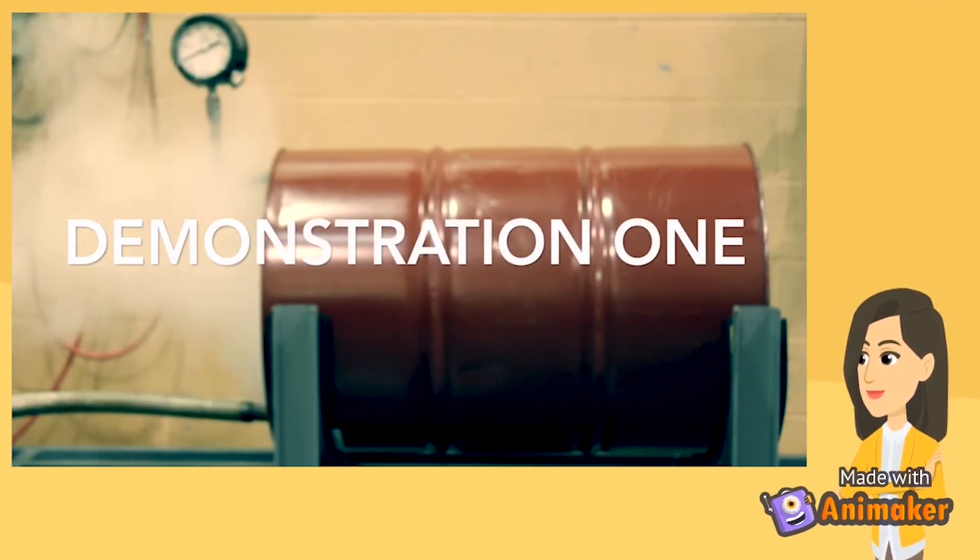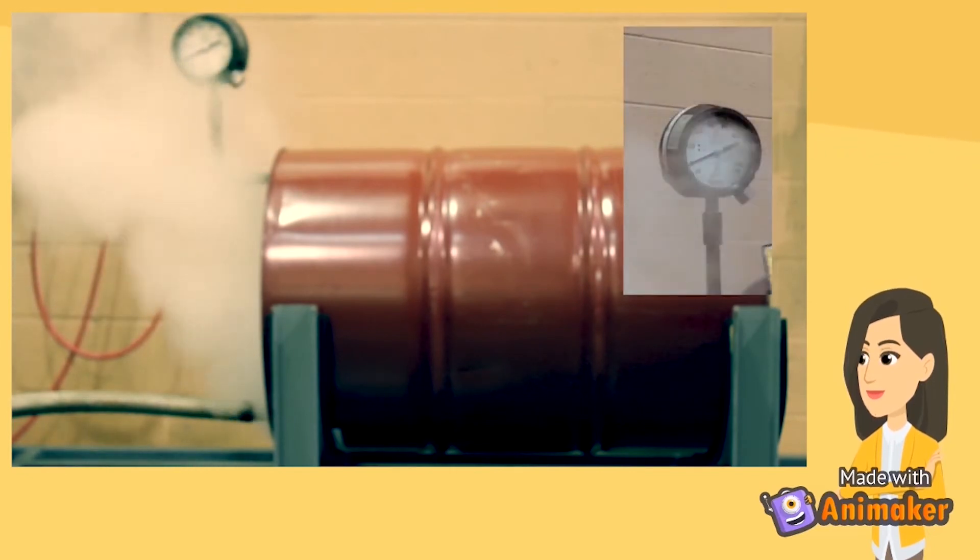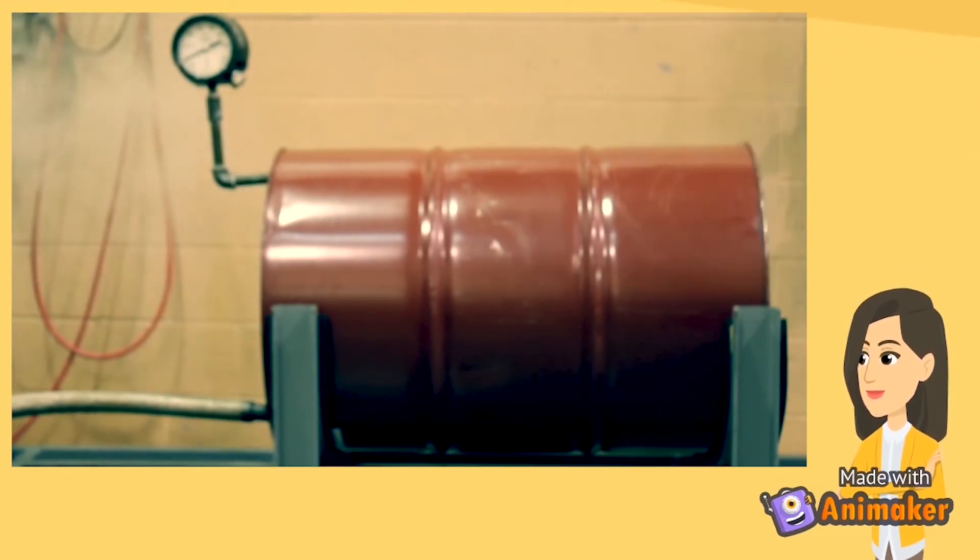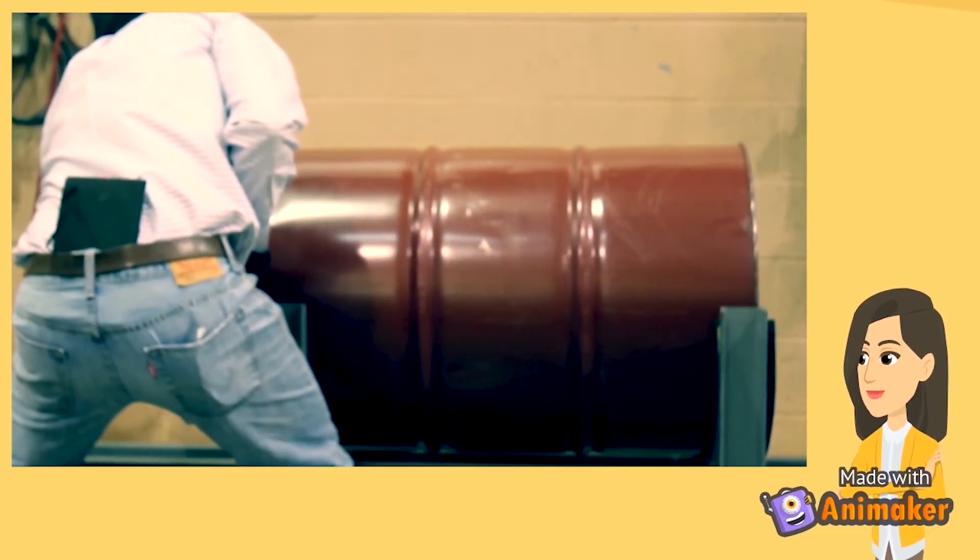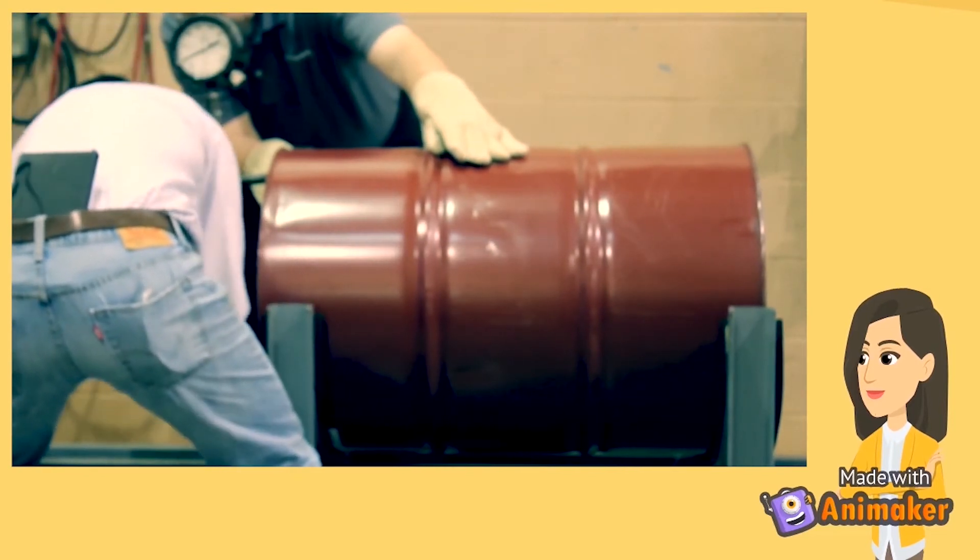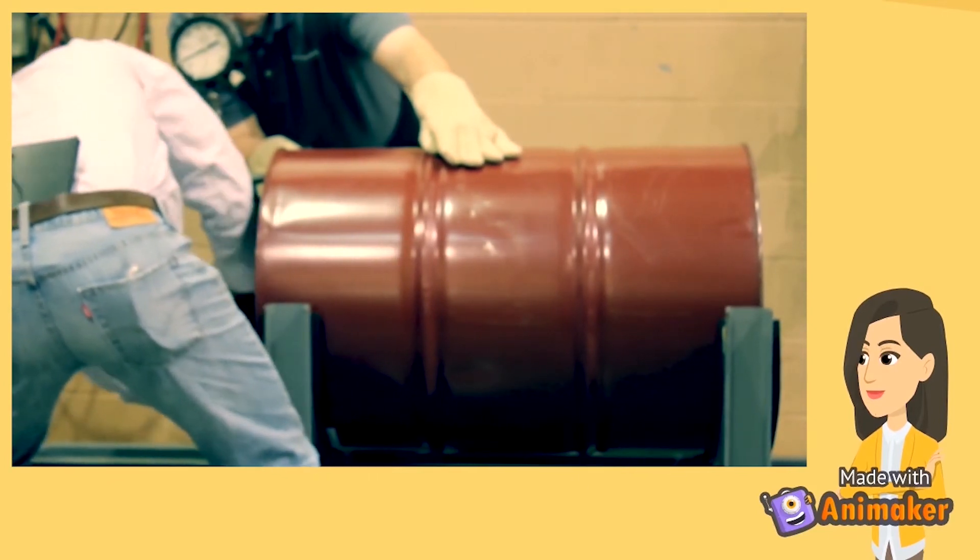The barrel begins this demonstration at 0 PSIG. The barrel in this example will be filled with steam while open to atmosphere. Once the air is purged and the barrel reaches 200 degrees Fahrenheit, we will pull the steam source and seal the barrel. Once the barrel is sealed and a condensing load is applied to the barrel, the steam inside condenses and the pressure falls. Ultimately, the pressure inside of the barrel is low enough relative to the atmospheric pressure outside that the barrel collapses.